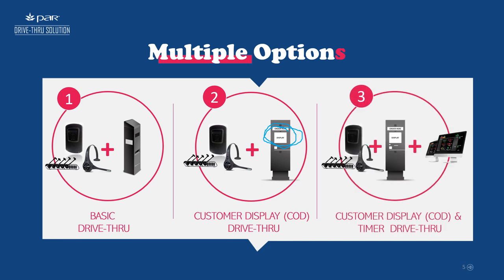The third and advanced version includes the base station with headset and an order point with or without a screen, plus a timer screen inside the restaurant. The drive-through order taker can see the cars outside at the order window or delivery window, and they can also see other store rankings to know how fast or slow they are delivering orders.